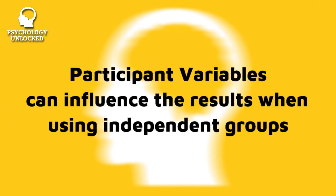Participant variables like age, gender, IQ, physicality, and so on could mess up your results. So researchers using independent groups tend to randomly assign participants to their conditions, in the belief that each group will average itself out and extreme results will therefore have less of an impact on the overall results. But what can be done if a researcher wants to control participant variables more tightly than relying on the law of averages? That's where our final experimental design — matched pairs — comes into play.